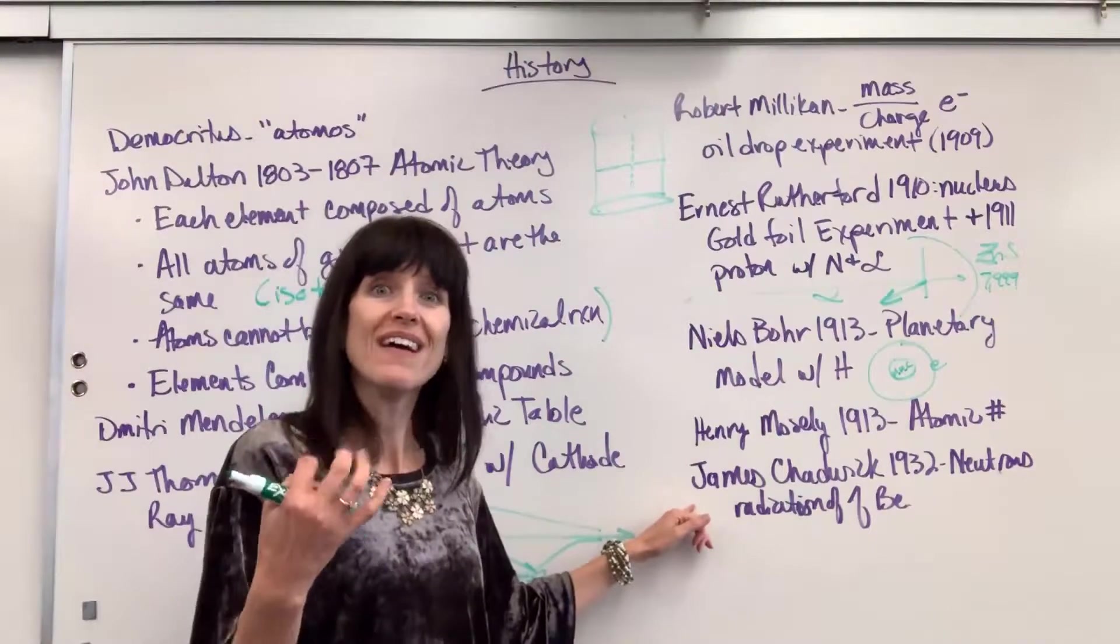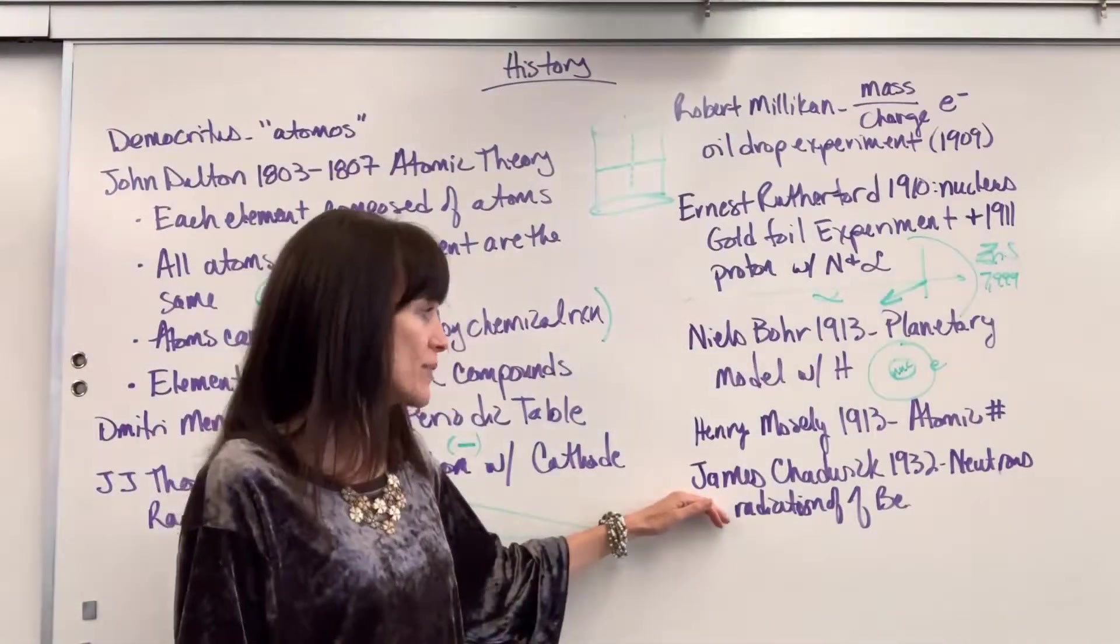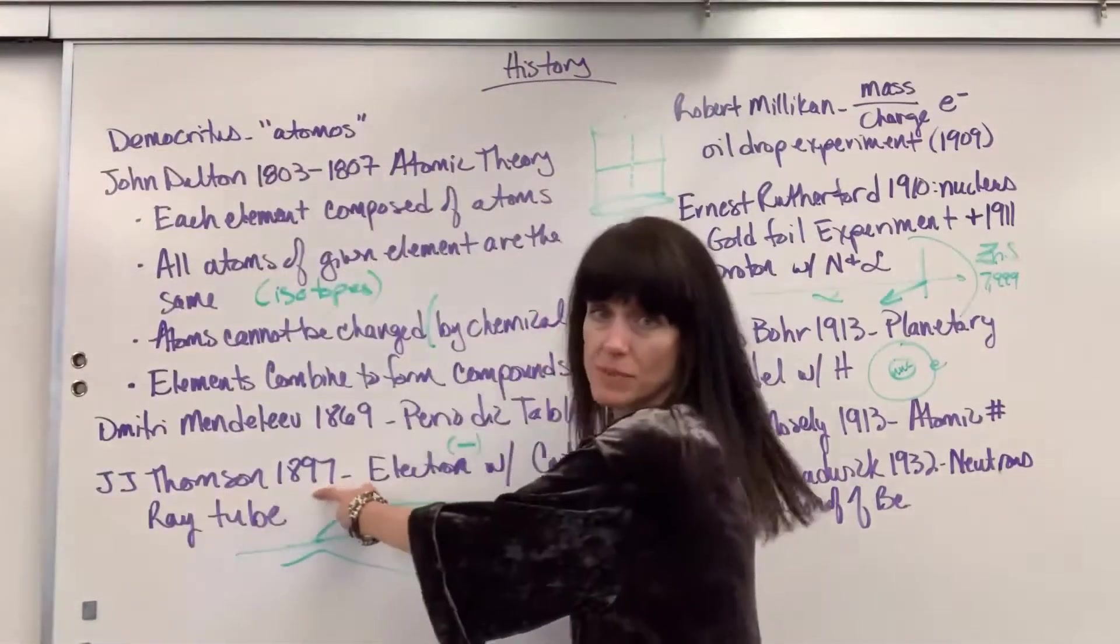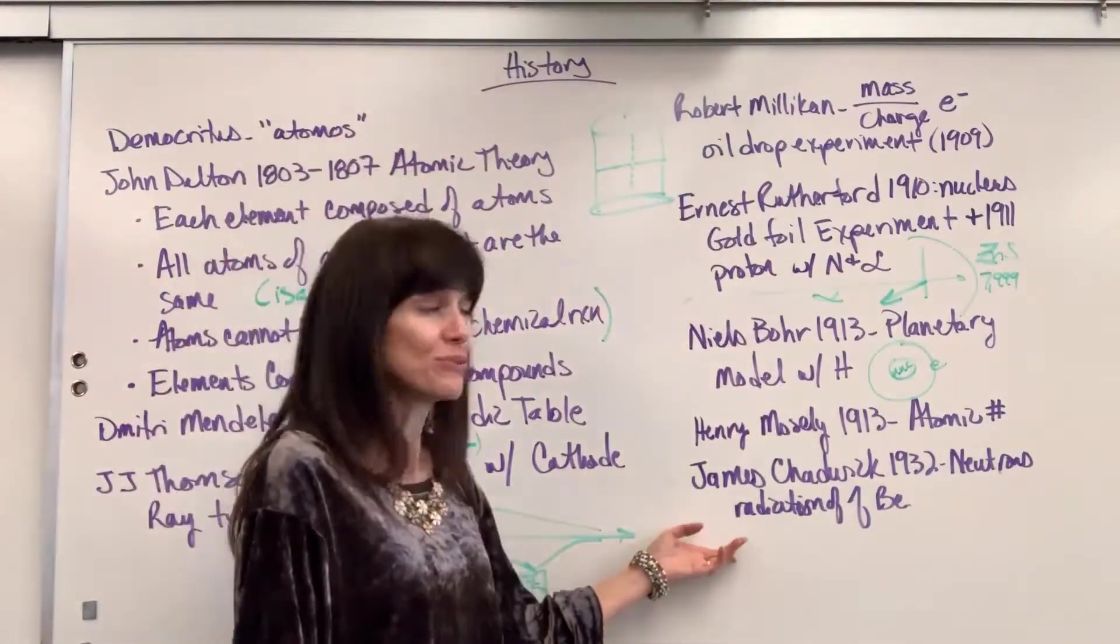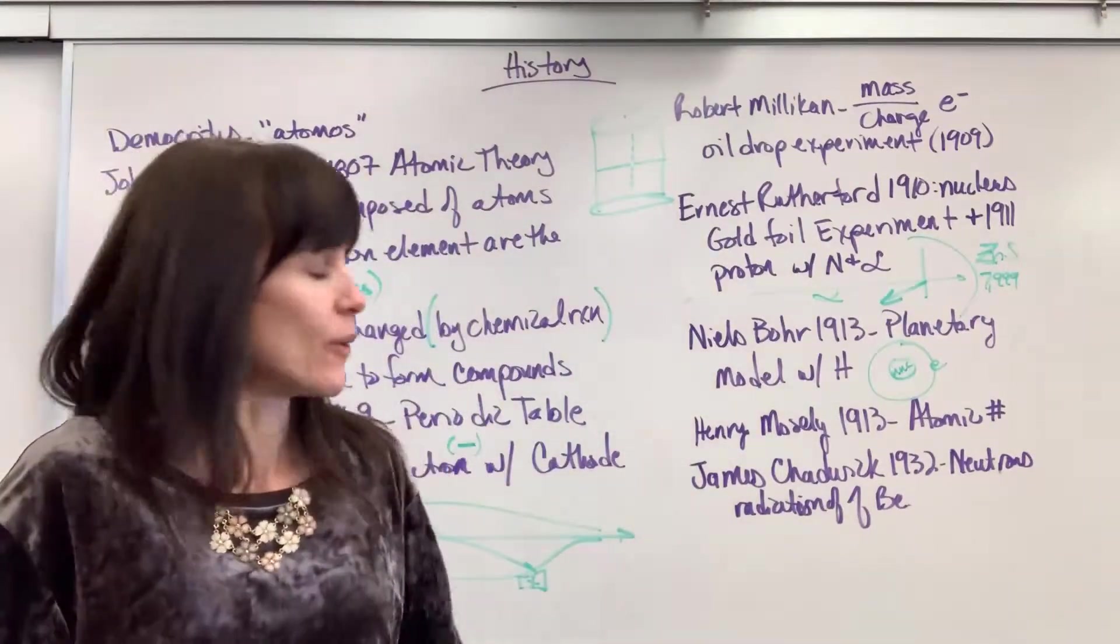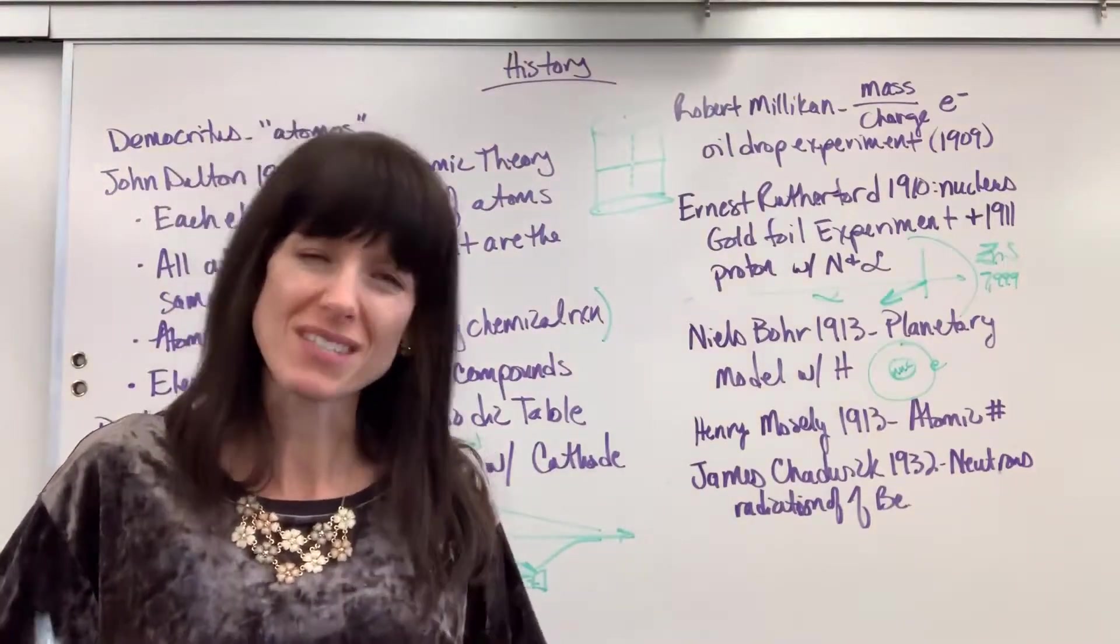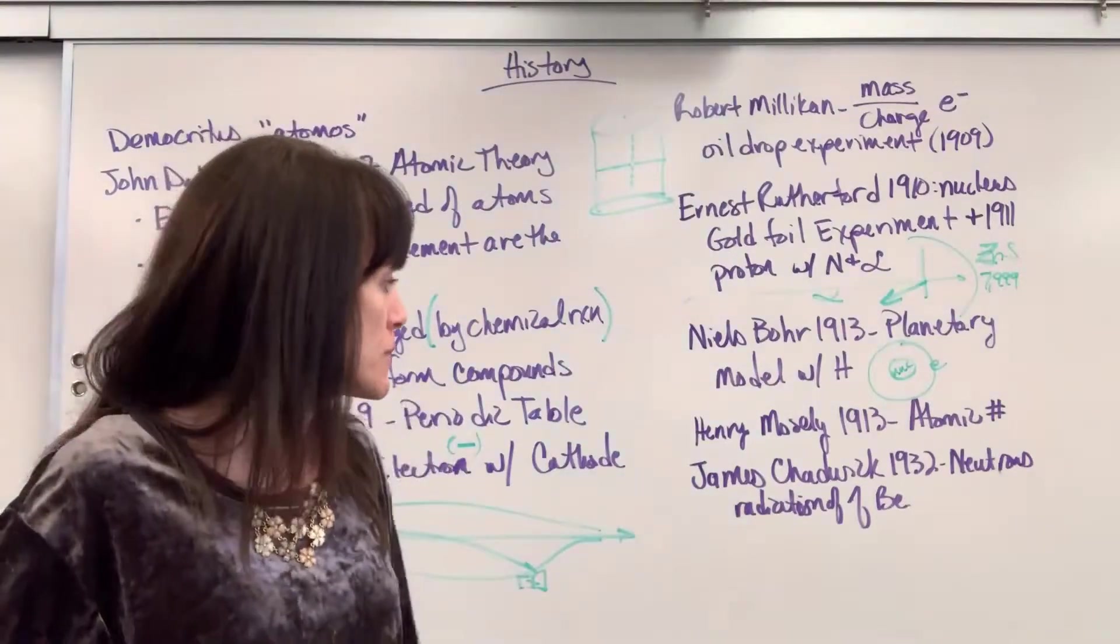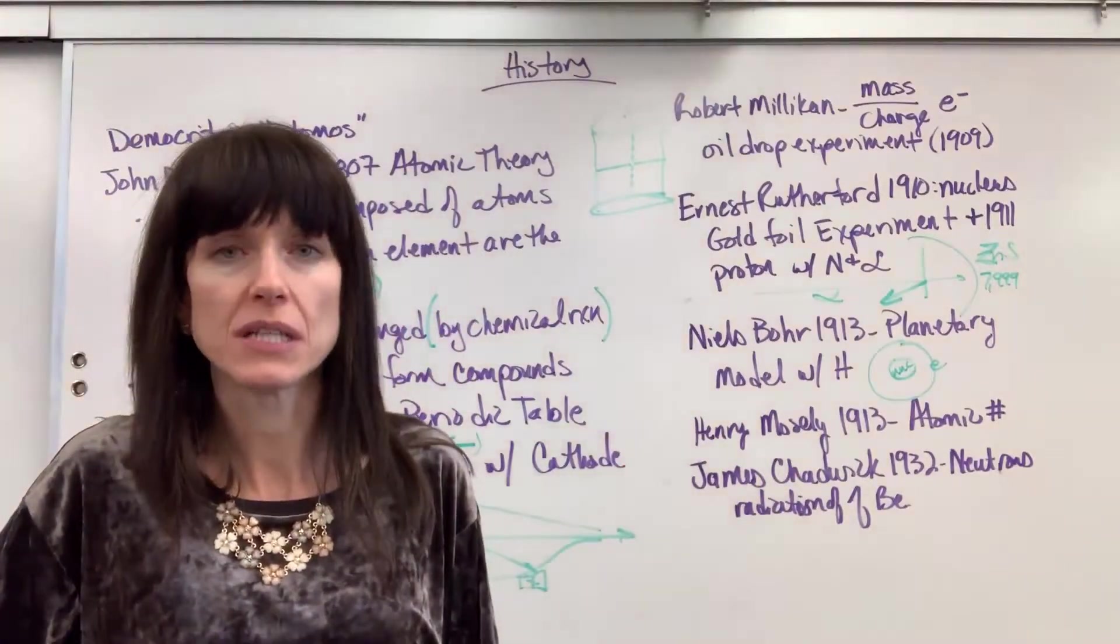Lastly, talking about the atomic structure, subatomic particles, look at this date, James Chadwick, 1932. 35 years after the first subatomic particle, 35 years after the electron was discovered, finally the neutron was discovered. And I always ask my students, why did it take so long? And I always have at least one student in every class raise their hand and they'll say, because it was neutral. It was difficult for us to detect. He was doing experimentation. It was the radiation off of beryllium and that's how he discovered the neutron.